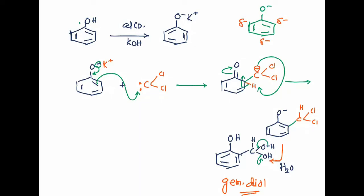After water is eliminated, the carbonyl group is revealed: benzene ring with one OH group and an aldehyde. This is the target molecule — ortho-hydroxy benzaldehyde, where benzaldehyde is the parent and OH is the substituent, also called 2-hydroxy benzaldehyde or salicylaldehyde. This is the mechanism of the Reimer-Tiemann reaction.